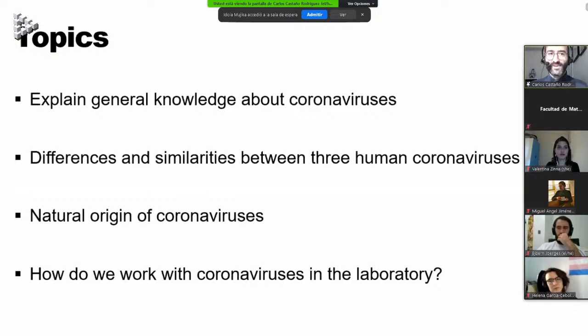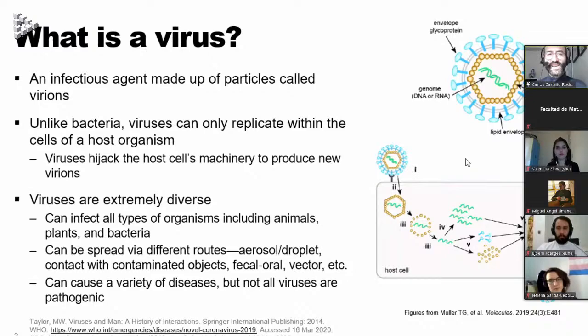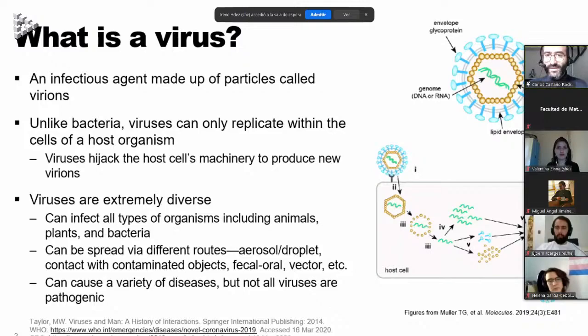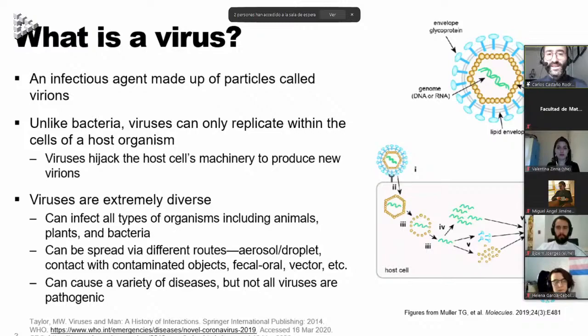First of all, what is a virus? Viruses are infectious agents made of particles called virions. Unlike bacteria, viruses can only replicate within the cell of a host organism. Viruses enter the cell and then they hijack the whole cell machinery to promote copies of themselves that in the end turn into new virions that will infect new cells.